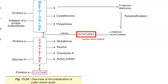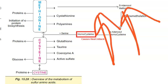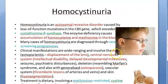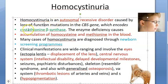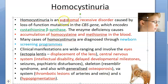In these people, homocysteine becomes very high while cysteine is less and methionine is very high. They don't have the enzyme cystathionine beta synthase — this is what you need to write in the exam. This is an autosomal recessive disorder.